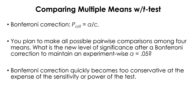People have come up with corrections to control this inflation of Type 1 error. One is called Bonferroni correction, where you divide the nominal alpha 0.05 by the number of comparisons you're going to make. For example, if you have four groups to compare, the new alpha after correction will be 0.05 divided by 6, which becomes less than 0.01. This correction is not ideal, as it quickly becomes too conservative to find any significant result when you have many groups to compare.